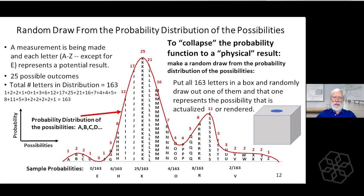Possibilities A, B, C, D, and so on to Z — here's the probability distribution. The higher they are up, the more probable they are. Getting a B is twice as probable as getting an A because there are two Bs and one A.